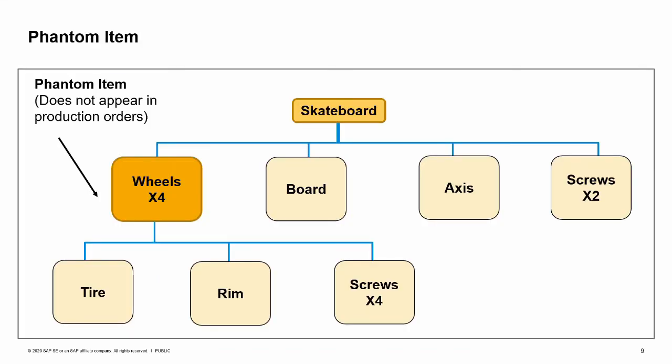A phantom item is a sub-assembly in the bill of materials that does not actually exist in inventory. It is used to simplify the bill of materials. Although the phantom item appears in the bill of materials, the production order shows the components needed to make the phantom item rather than the phantom item itself. An item can be defined as a phantom item in the item master data. When copying the bill of materials to the production order, the phantom bill of materials components are copied as well. In the graphics we see a bill of materials for a skateboard. The four wheels of the skateboard are a phantom item. When the skateboard bill of materials is copied to the production order, the components — tire, rim, and screws — will appear, but not the wheels.